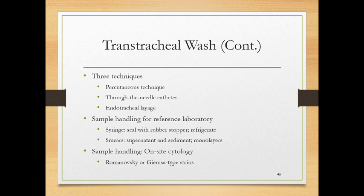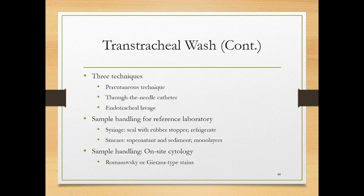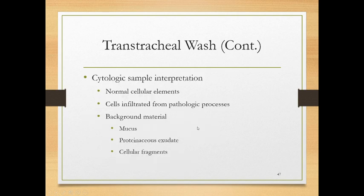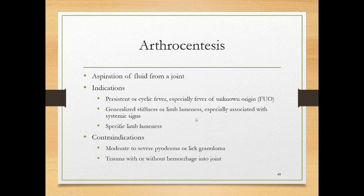When you have your sample, seal it with a rubber stopper in a syringe and refrigerate it. If making a smear right away, make it one layer thick — a very thin smear — and use specific stains available in-house. Normal cells will be present, as well as pathologic cells causing disease, along with mucus, proteinaceous exudate, and cellular fragments. Arthrocentesis is aspiration of fluid from a joint. Indications include persistent or cyclic fever of unknown origin, generalized stiffness or limb lameness — especially with systemic signs — or specific limb lameness.